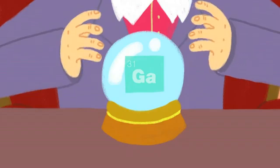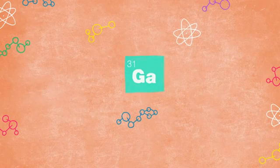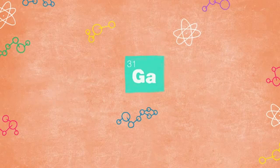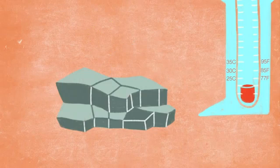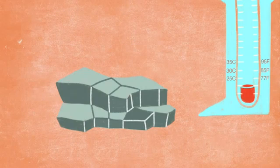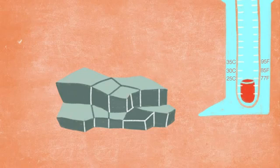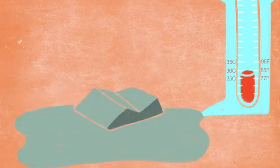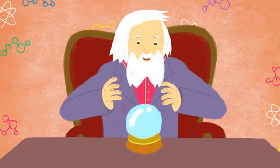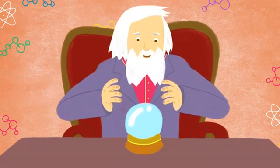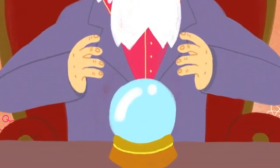So were Mendeleev's predictions right? Gallium's atomic weight is 69.72. A cubic centimeter of it weighs 5.9 grams. It's a solid metal at room temperature, but it melts at a paltry 30 degrees Celsius, 85 degrees Fahrenheit. It melts in your mouth and in your hand. Not only did Mendeleev completely nail gallium, he predicted other elements that were unknown at the time.